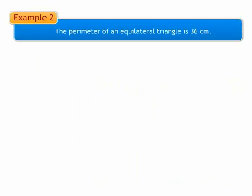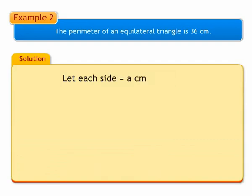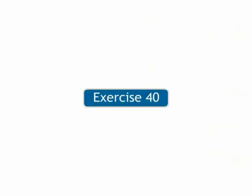Example 2: The perimeter of an equilateral triangle is 36 centimeters. Let us assume that the length of each side of the equilateral triangle as a centimeters. Therefore, perimeter of equilateral triangle is equal to a plus a plus a which is equal to 3a centimeters. It is given that perimeter is equal to 36 centimeters. Hence, we can write as 3a is equal to 36. Now, let us solve the problems from exercise 40.